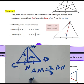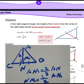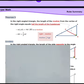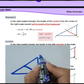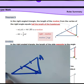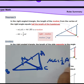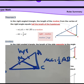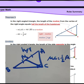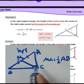Theorem 3 concerns the right angle triangle. In a right angle triangle, the median from the vertex of the right angle divides the hypotenuse into two equal parts such that AM equals MB, and MC equals half of the hypotenuse AB. So CM equals half of AB.